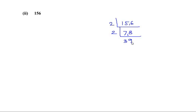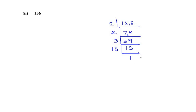Now 39 ends with 9, which is a multiple of 3, so let us try dividing by 3. 3 times 13 gives us 39. Finally, 13 is itself a prime number, so it is divisible by 1 or itself — 13 times 1 is 13. We repeatedly divide until we reach 1. So we can write 156 as 2 times 2 times 3 times 13, or equivalently 2 to the power 2 times 3 times 13, using the laws of indices.